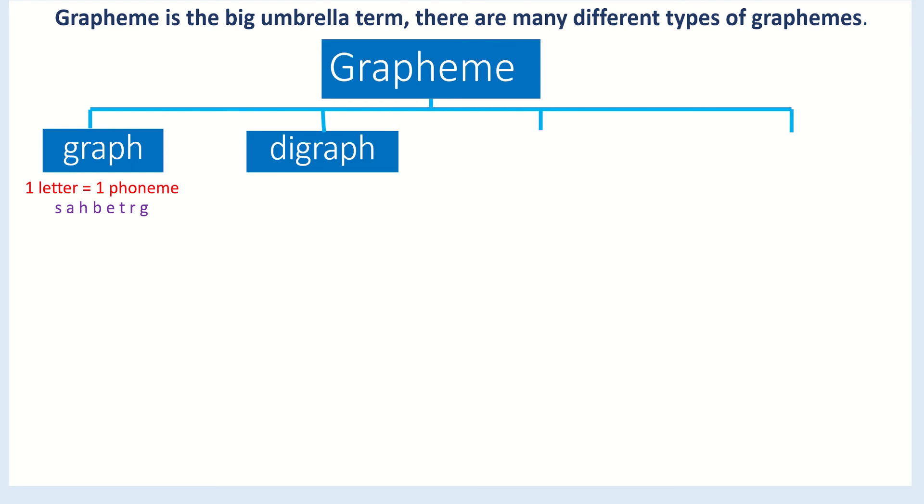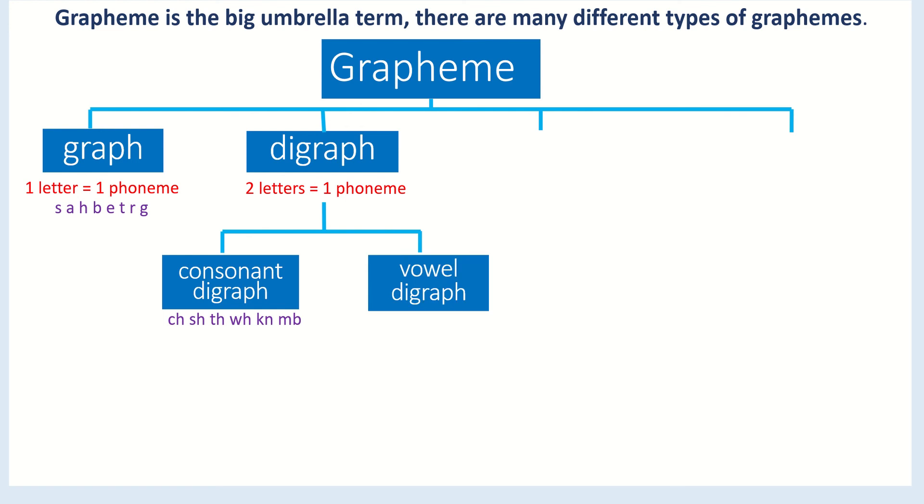Next, they're going to learn about a digraph. A digraph is where there are two letters that make one phoneme. There are quite a few different digraphs. We've got consonant digraphs, and these represent all the consonant phonemes. Then we have vowel digraphs, and these represent all of the vowel phonemes.